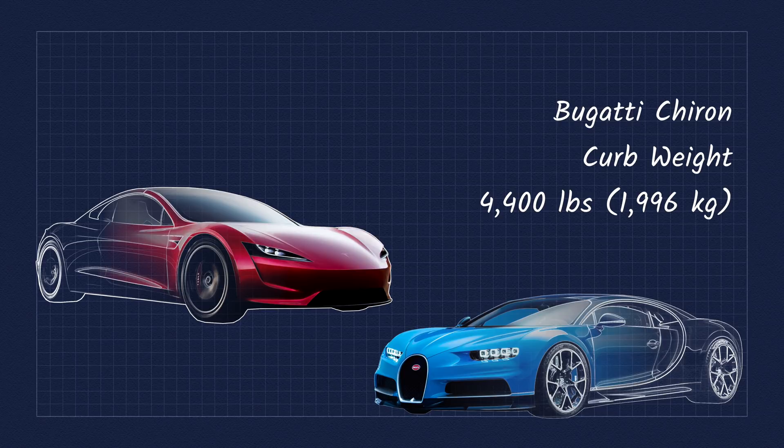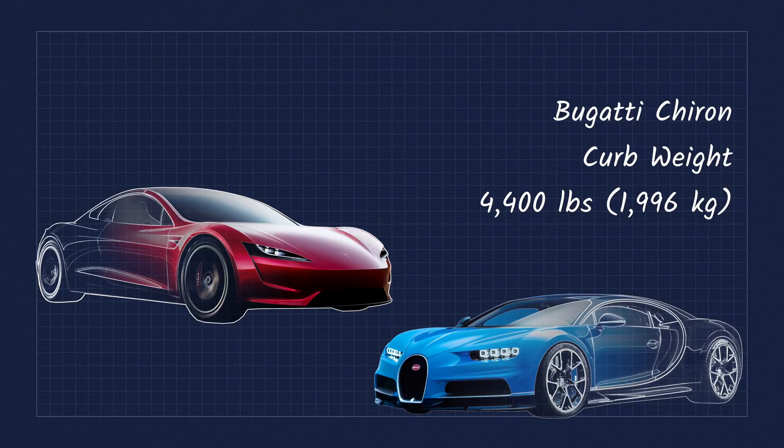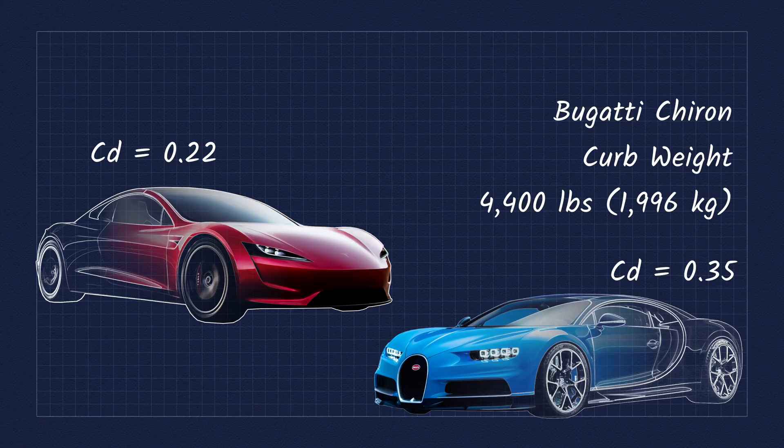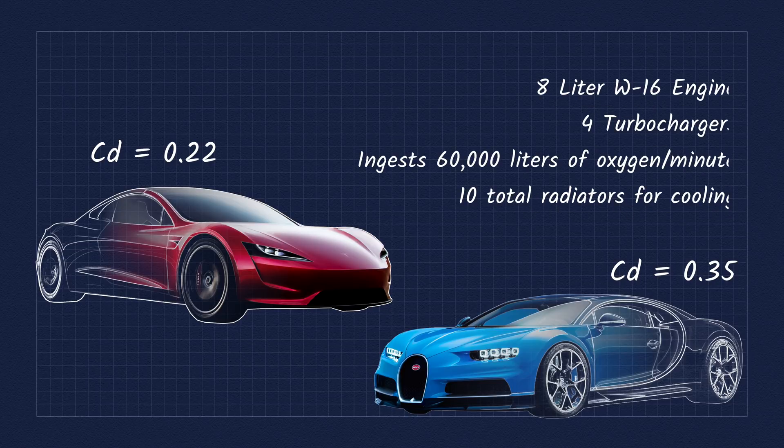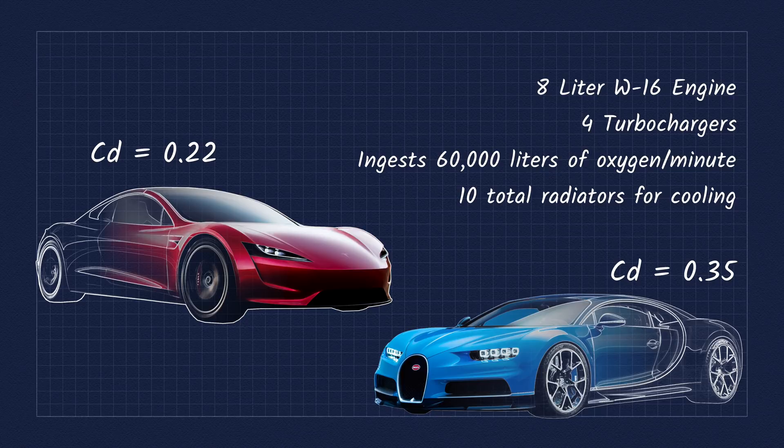Aerodynamics is where these two cars really differ, with a 0.35 drag coefficient for the Chiron and an amazing 0.22 for the 2020 Roadster. The Chiron's relatively high drag coefficient is due to its 8-liter engine's incredible thirst for air and its equal need for cooling with 10 radiators.